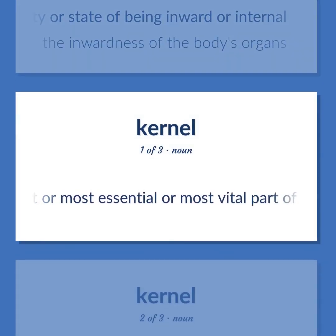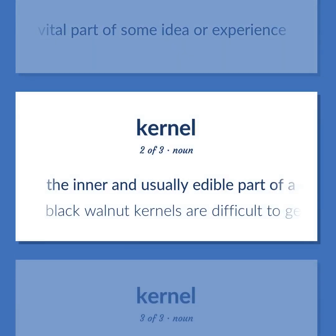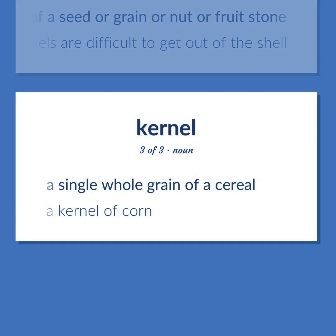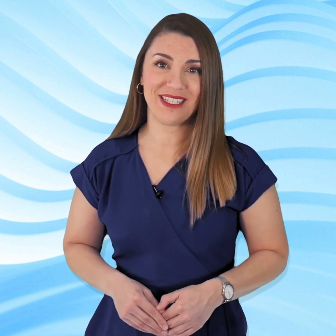Kernel: The choicest or most essential or most vital part of some idea or experience. The inner and usually edible part of a seed or grain or nut or fruit stone — black walnut kernels are difficult to get out of the shell. A single whole grain of a cereal — a kernel of corn. Subscribe to our YouTube channel to become part of our growing community and to learn English effectively.